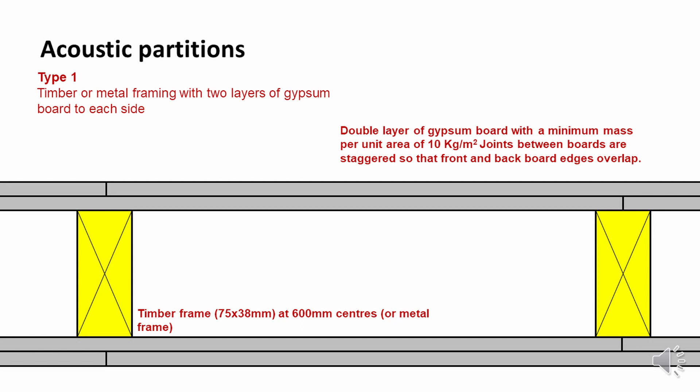Type one is timber or metal framing with two layers of gypsum board to either side. The gypsum board has specific densities attached to it, looking for a minimum mass per unit area of 10 kilograms per meter squared. As we're installing that onto the framing, we would want to stagger the joints so that there weren't any joints in the boards lining up.